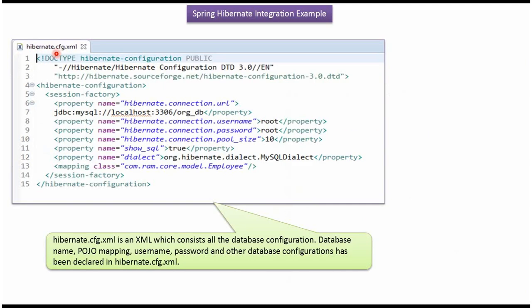Here you can see Hibernate.cfg.xml. This XML file contains all the database configuration, like which database we are going to connect, the username and password of the database, and the POJO mapping.